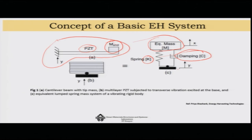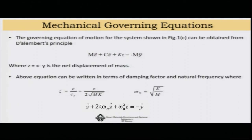All these can be modeled as a single degree of freedom system receiving base excitation y, with motion x at the end mass point. We define a new parameter z = x − y, the net displacement of the mass. The governing equation of motion becomes: M·z̈ + C·ż + K·z = −M·ÿ. This comes from a force balance of such a system.